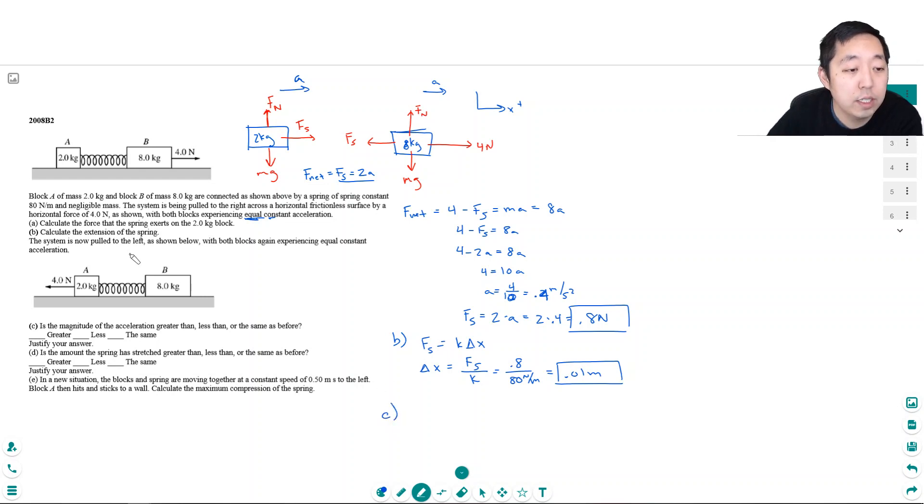C. The system is now pulled to the left as shown below with both blocks again experience equal constant acceleration. Is the magnitude of the acceleration greater than, less than, or the same as before? Well, overall, the whole thing weighs 10 kilograms. If I think about a free body diagram over the whole thing, this is a whole 10 kilogram thing. And I'm putting 4 newtons on this 10 kilograms. And same here, I'm doing 4 newtons on this 10 kilograms. So it's really the same.